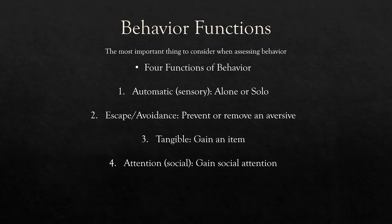Quick wrap-up. As an RBT, when a new behavior occurs, first ask yourself: why do I think this is occurring? What were the antecedents? What were the consequences? Four functions: automatic or sensory — alone or solo, you don't need a second person. Escape and avoidance — prevent or remove an aversive, and understand the difference. Tangible — gain an item, a physical thing. And then attention — social attention, you're gaining social attention. Functions are not too difficult, very straightforward. Once you learn them, you'll never forget them. These are our fundamentals.